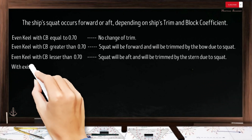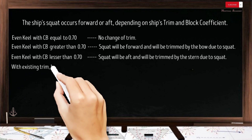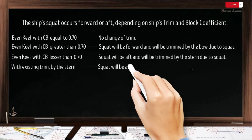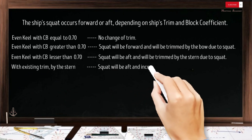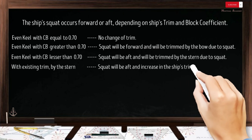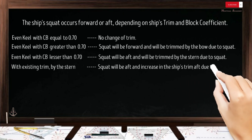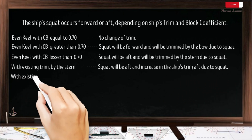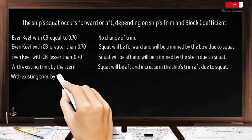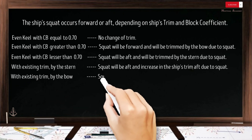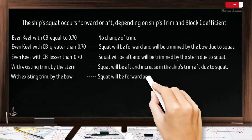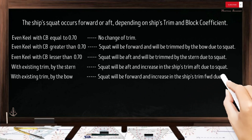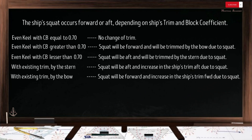If the ship has an existing trim by the stern, the squat will take place on the after part of the vessel and there will be an increase in the ship's trim aft. If the ship has an existing trim by the bow, the squat will take place on the forward part of the vessel and there will be an increase in the ship's trim forward.